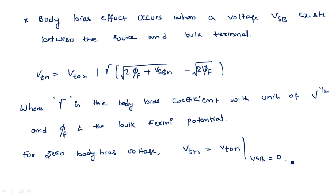Suppose we have a small amount of VSB — even 0.1 millivolts — that small value will still have an influence on the gamma coefficient, so some factor will be added to the threshold voltage.